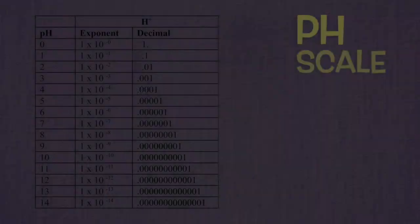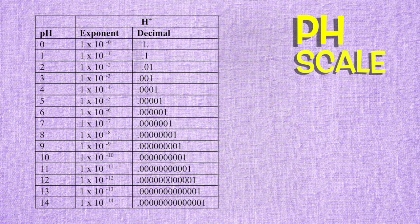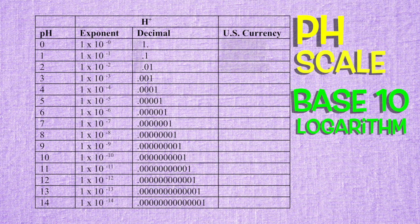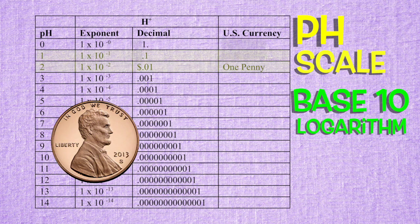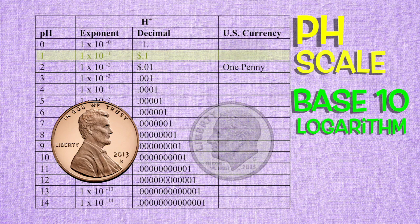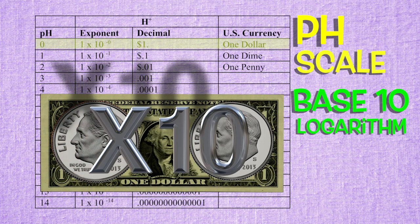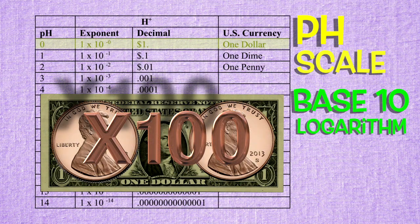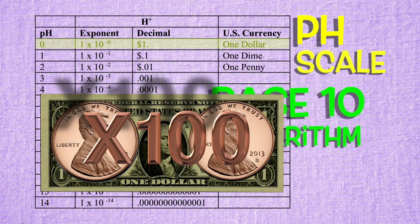The pH scale is a base 10 logarithm. And I know that sounds incredibly scientific, but it's going to all make sense. The United States monetary system is also a base 10 logarithm. If we add a dollar sign to pH 2, we have one cent — one penny. pH 1 gives us 10 cents — one dime. There are 10 pennies in a dime. pH 0 gives us one dollar — there are 10 dimes in one dollar, and 100 pennies also in a dollar. That's a base 10 logarithm.